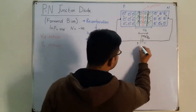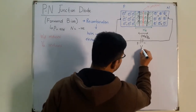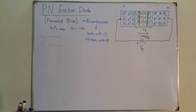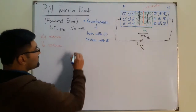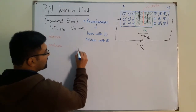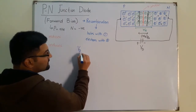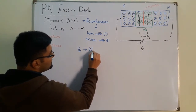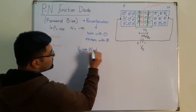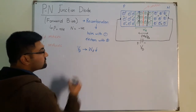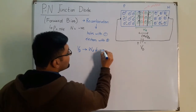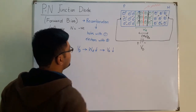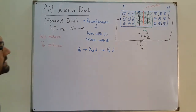The width of the depletion region WD in forward bias has reduced. The voltage across the diode is VD. So if you apply a potential VD, this results in the width of the depletion region reducing, and this results in the barrier potential also reducing.